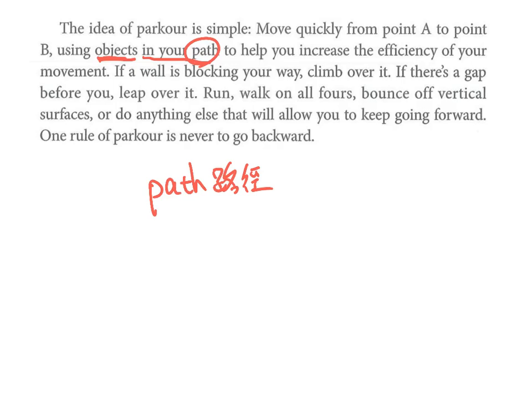藉由运用你在路径上的物体，path这个单字的意思叫做路径。帮助你increase，increase就是增加，帮助你增加efficiency。efficiency这个单字的意思叫做效率，增加移动的效率。